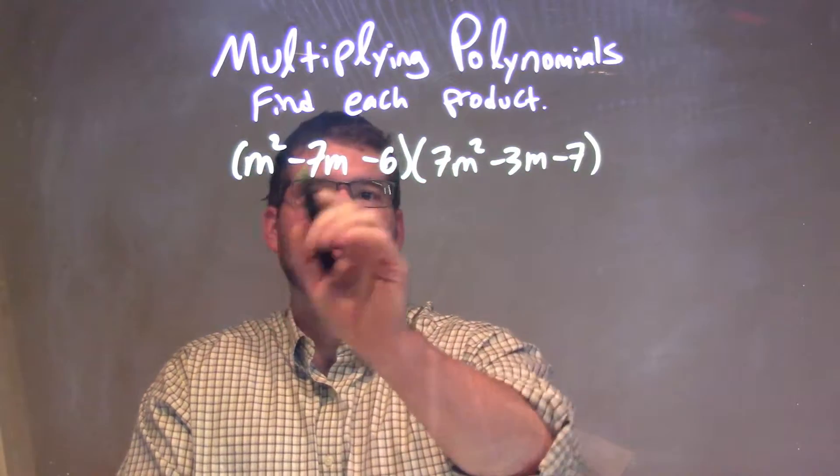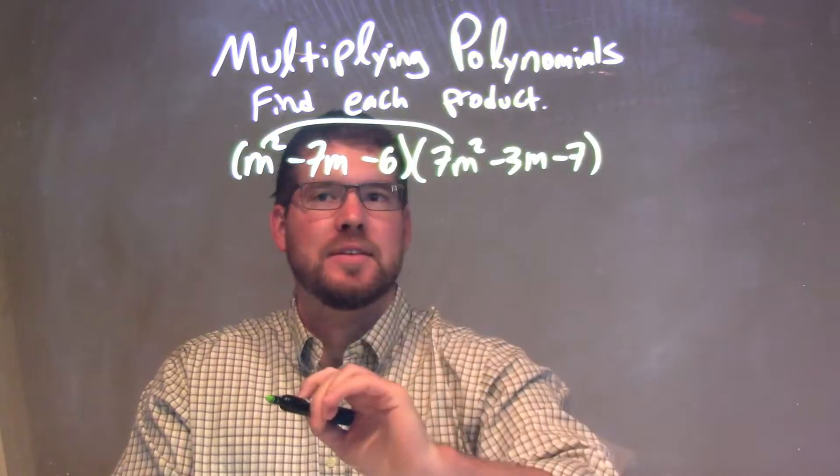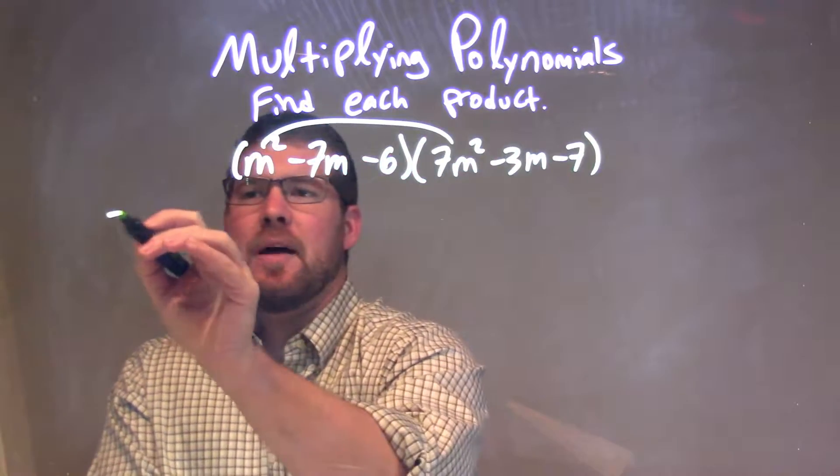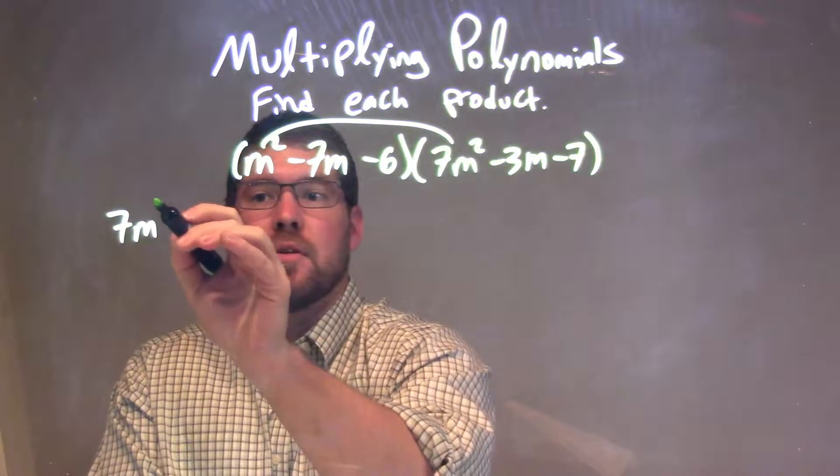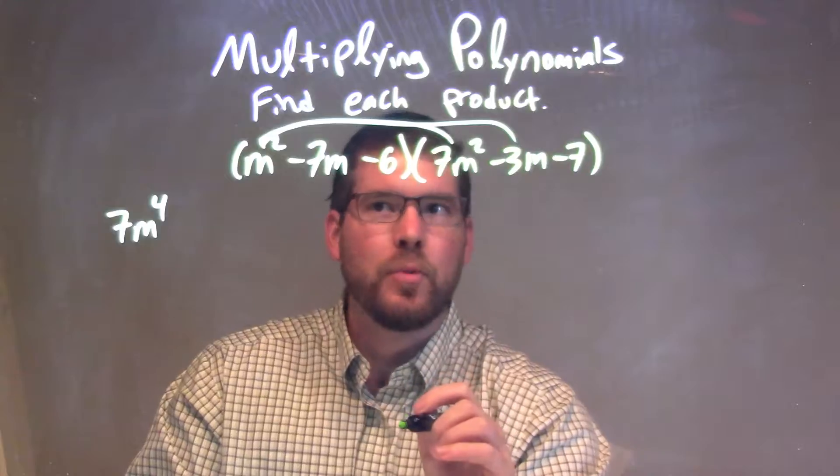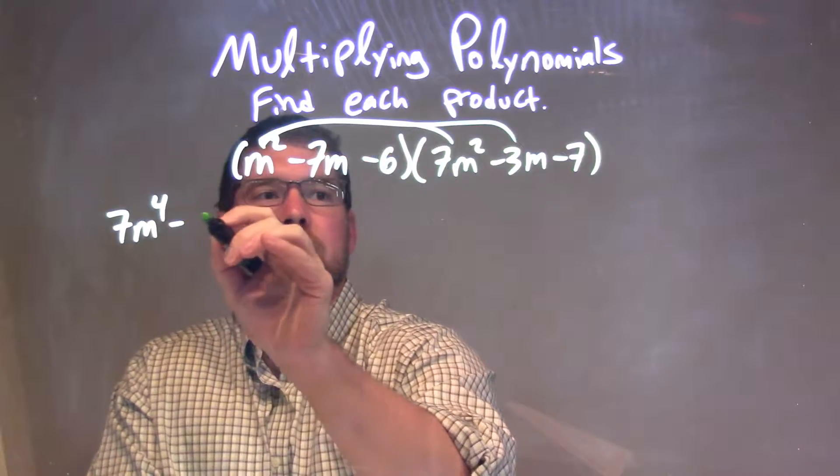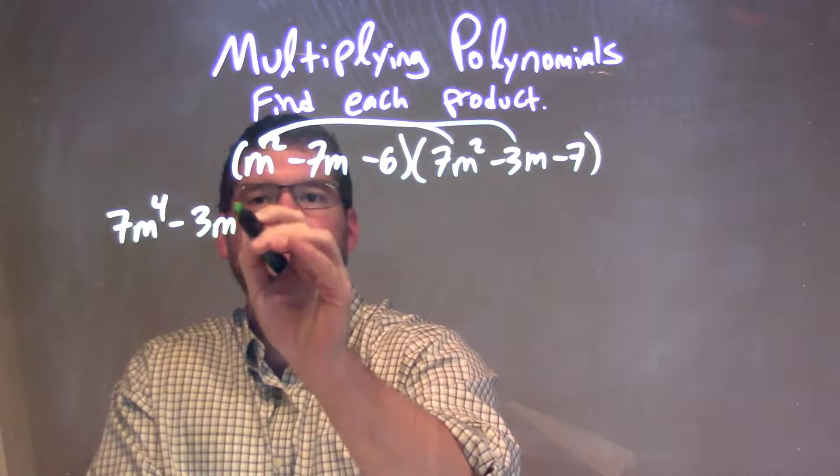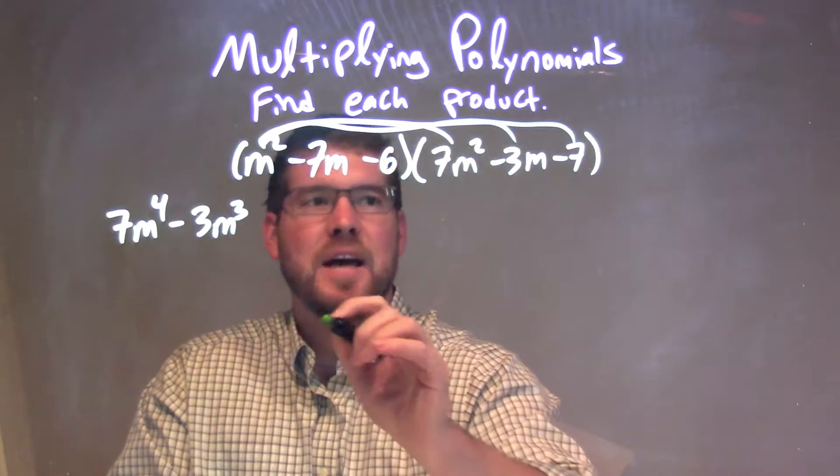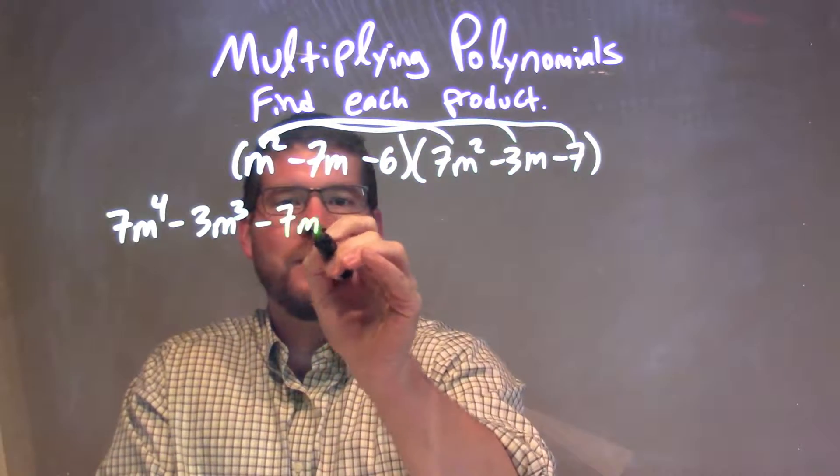So we have our m squared first, so let's go m squared times 7m squared, and I've drawn my arcs to make sure I've connected everything, and that's just 7m to the fourth power. Now m squared times minus 3m is minus 3m to the third power, and then m squared times minus 7 is minus 7m squared.